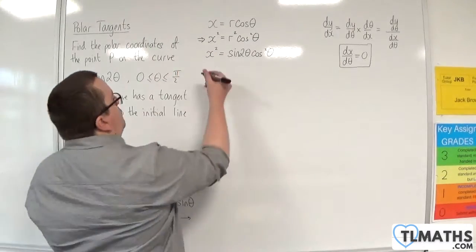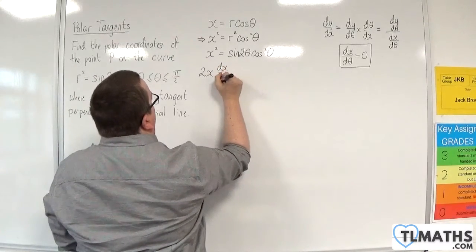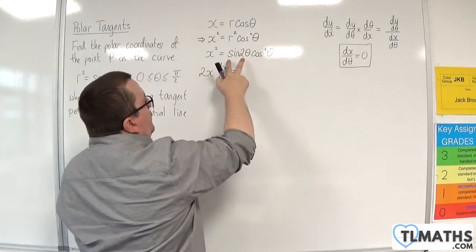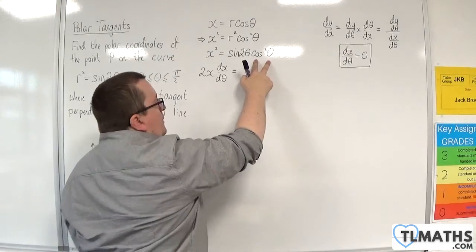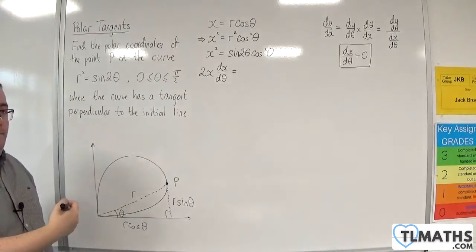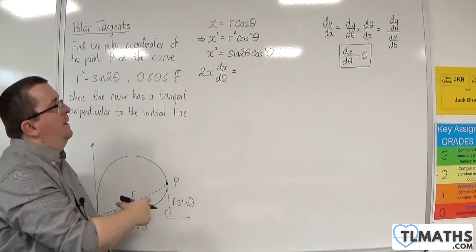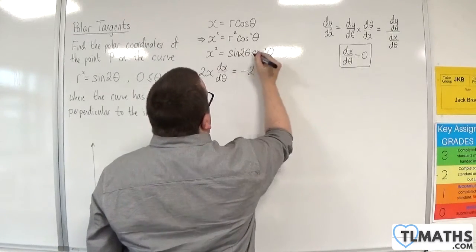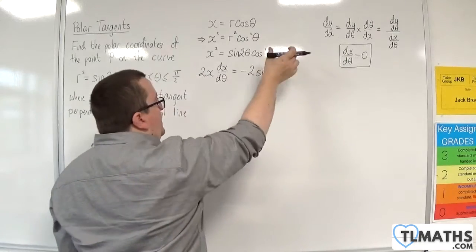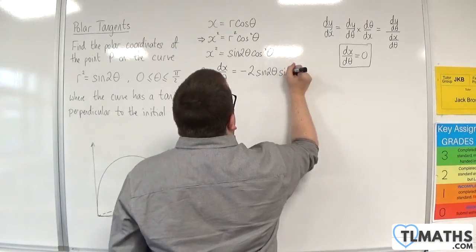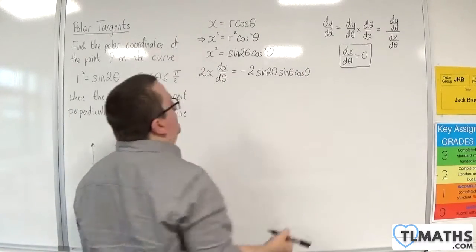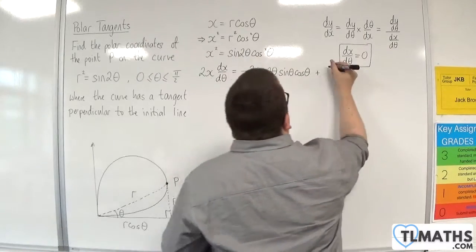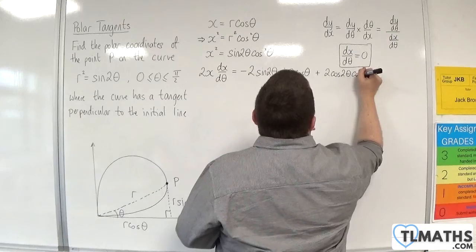Differentiating implicitly, the left-hand side gives 2x · (dx/dθ). On the right-hand side, I'll need to use the product rule. The first term times the derivative of the second: the derivative of cos²θ brings the 2 to the front, the derivative inside is −sinθ, dropping the power by 1 gives −2 sin(2θ) sinθ cosθ. Then plus the second times the derivative of the first, which gives 2 cos(2θ) cos²θ.